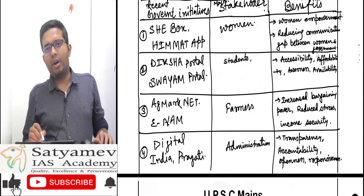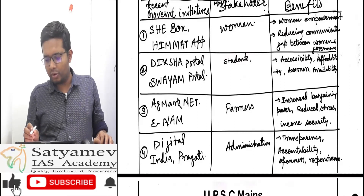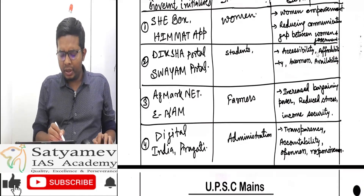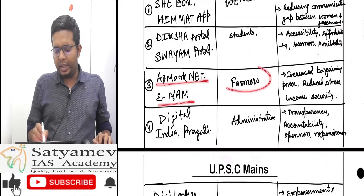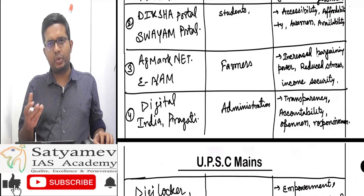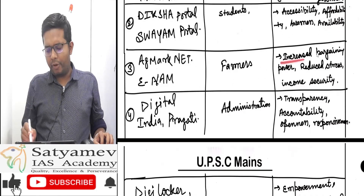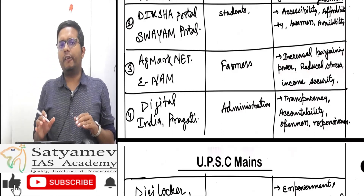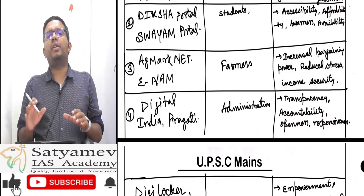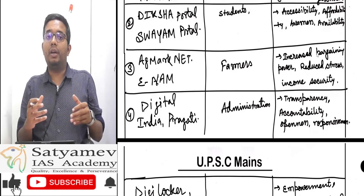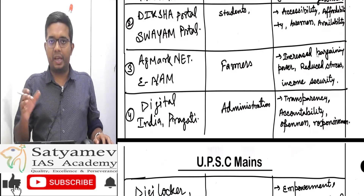eMarkNet and eNAM are for farmers. These initiatives benefit farmers through increased bargaining power, reduced stress, and income security. All the points written here are from the perspective of ethics — not the factual Paper 3 perspective — but an ethical perspective.